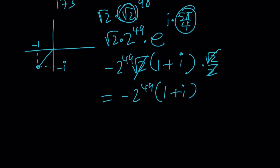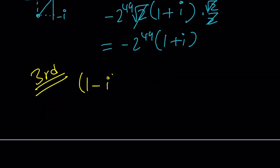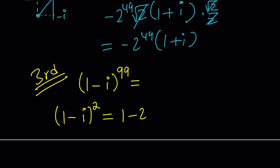Let's look at the third method, which is the nicest. The key observation is that 1 minus i is special. To find something to the 99th power, let's look at smaller powers: what about 1 minus i squared? If you expand it, you get 1 minus 2i plus i squared. Since i squared is negative 1, this gives negative 2i. So squaring 1 minus i gives a pure imaginary number, which is very useful.